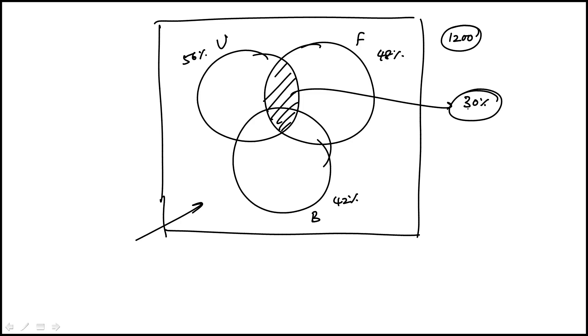And the question is to maximize this region here, which is who cited bargain prices, but neither user-friendly nor the fast response time. So we're looking at this region, meaning bargain prices only. So this is what we need to maximize.